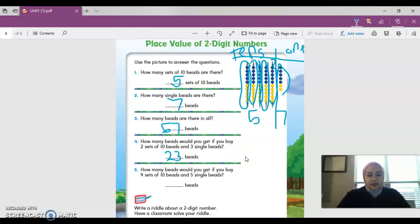Number five. How many beads would you get if you buy four sets of 10 beads and five single beads? Four sets of 10 beads means there's four in the tens place. Four sets of 10 beads and five single beads means there's five ones. Four tens and five ones makes what number? 45. So I'm going to write 45.